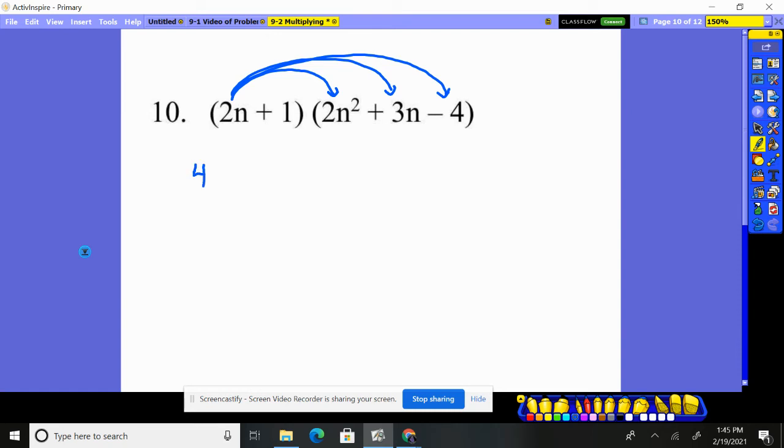Two times two is four, n times n squared is n cubed. Two n times three n: six n squared. Two n times negative four is minus 8n.